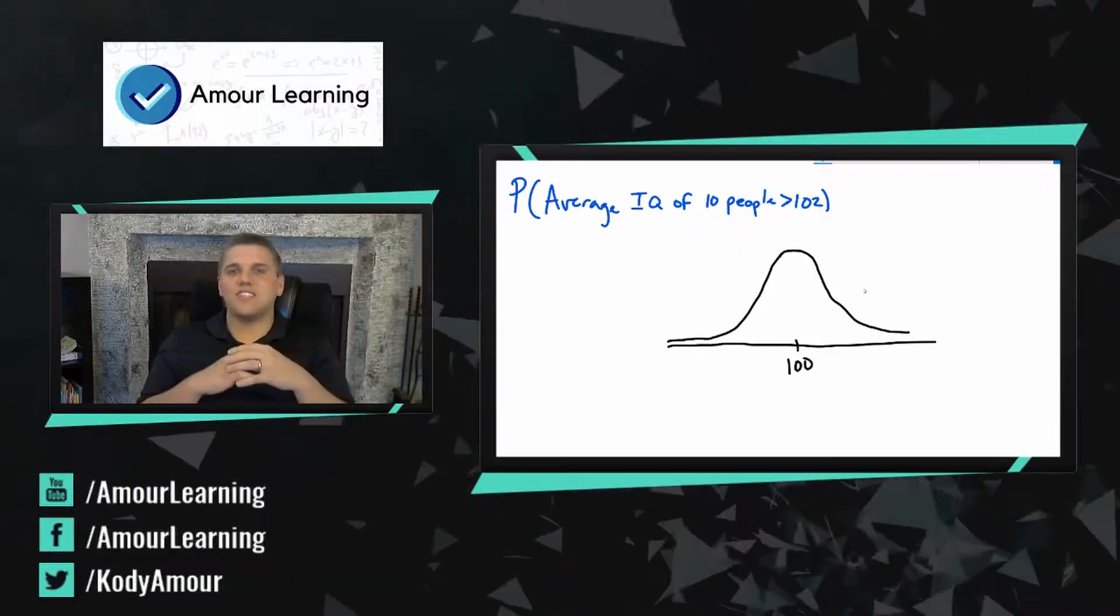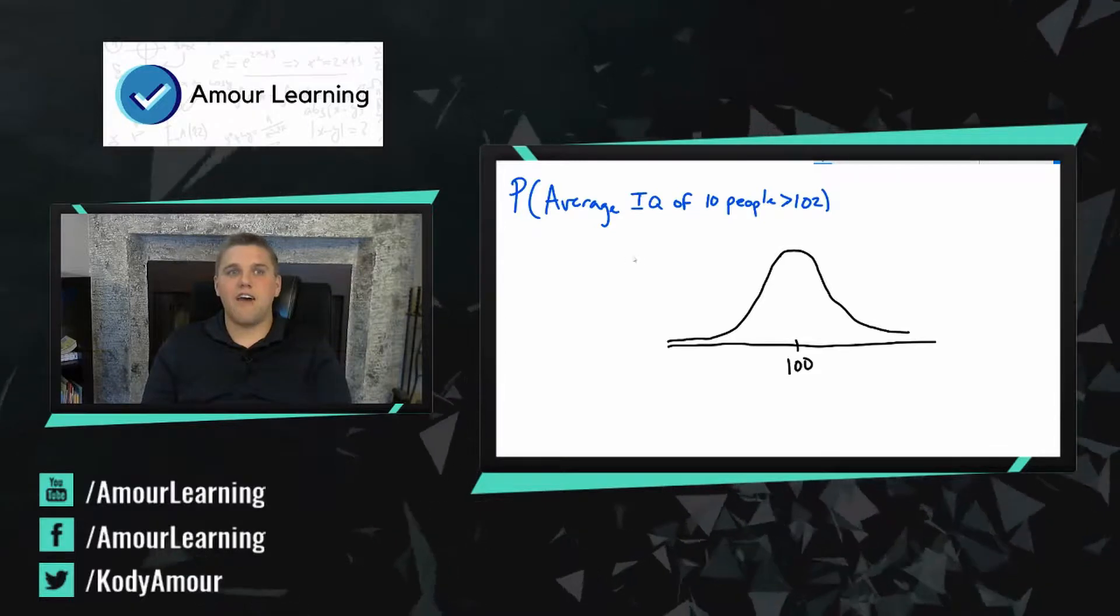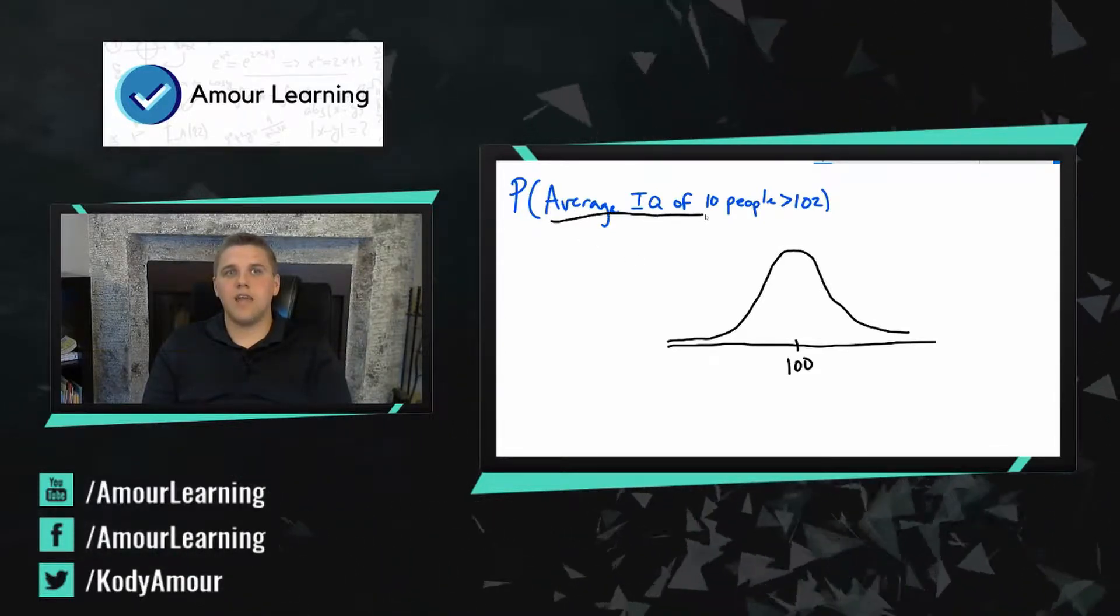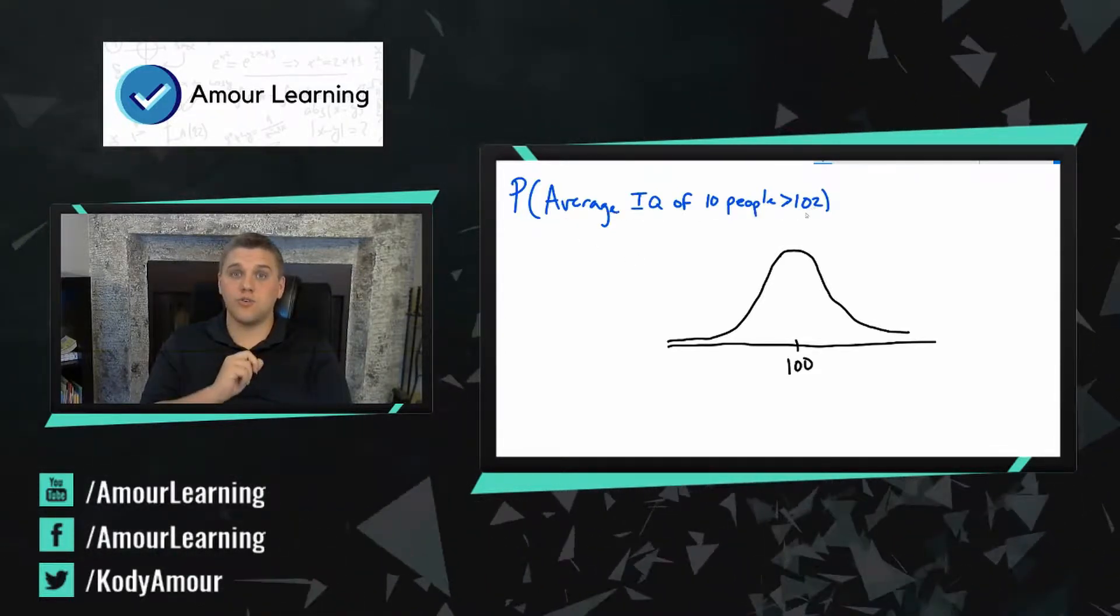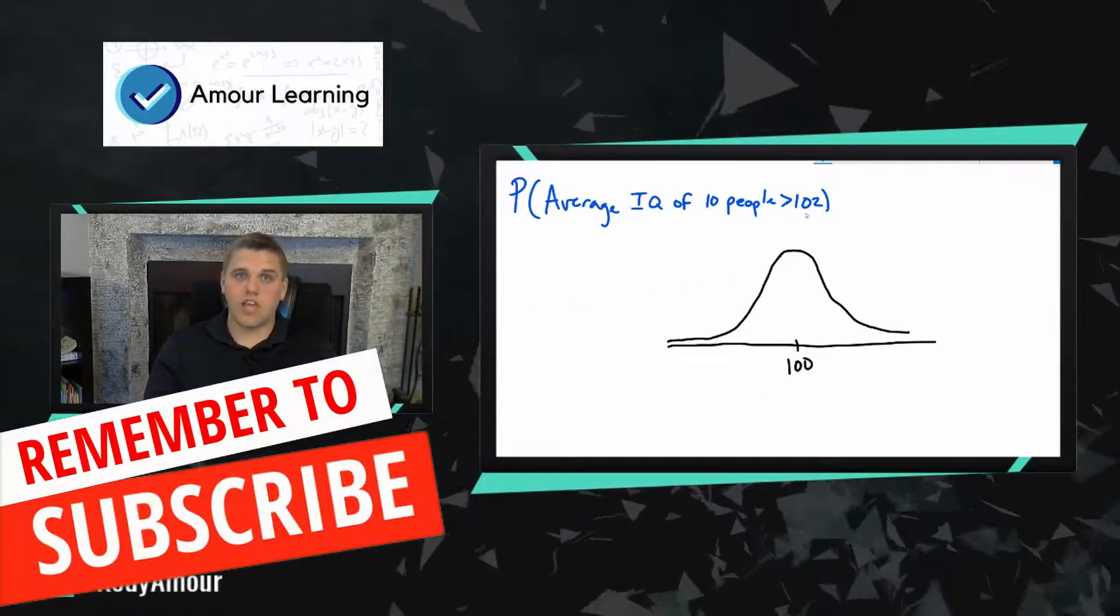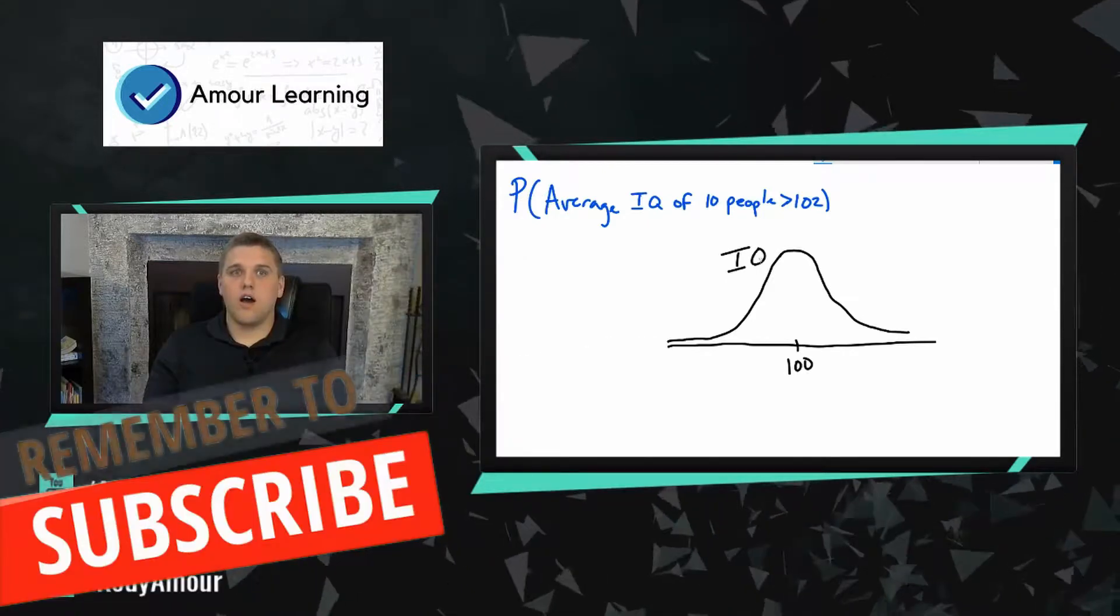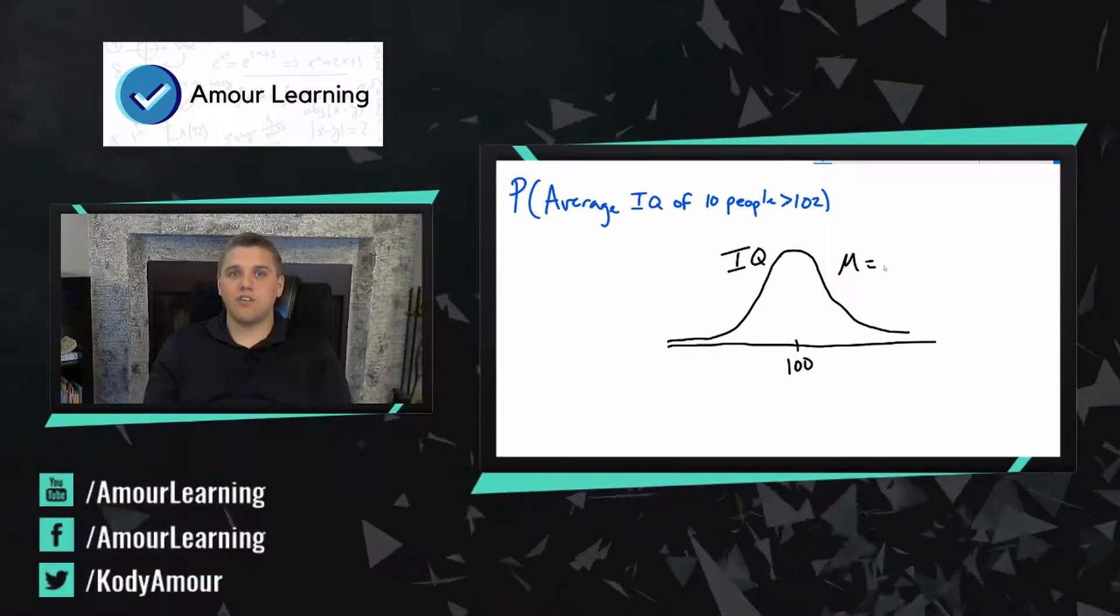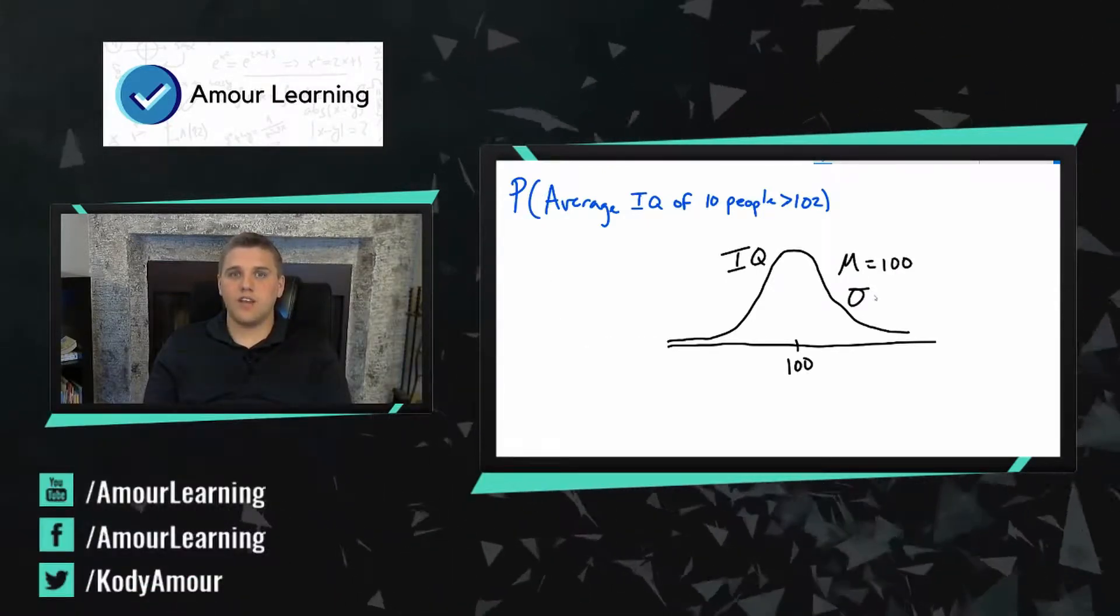Alright, so I really want to work out this example of finding the probability that the average IQ of 10 people is greater than 102. Now we already know a lot about the IQ bell curve. There's a reason I've been dealing with the IQ bell curve for so long. We know that it has an average of 100 and a standard deviation of 16.